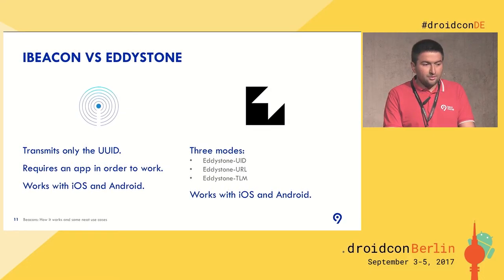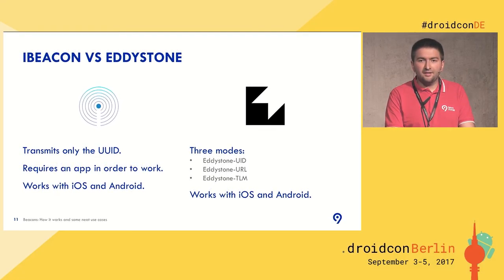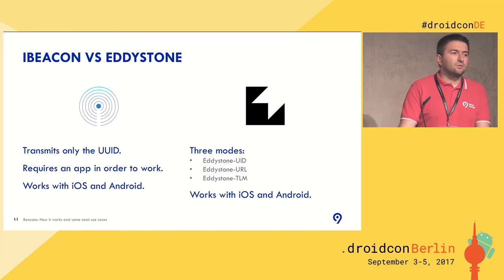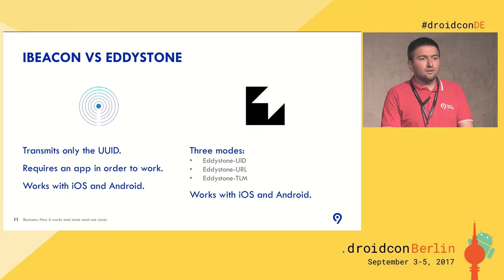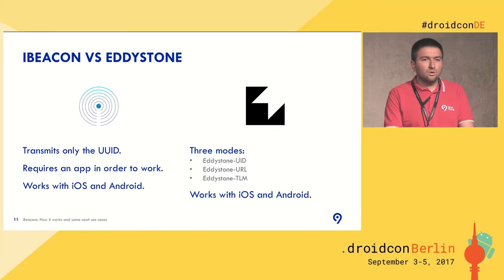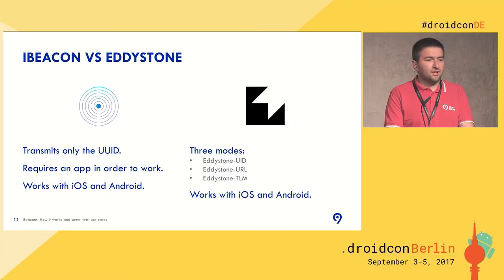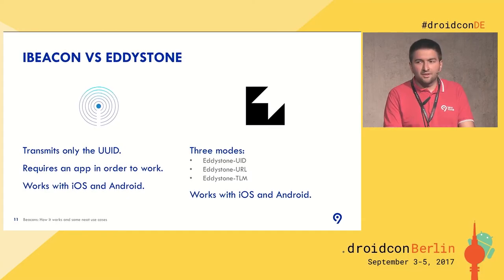The last mode is Eddystone Telemetry. This one is a bit more complex. It emits an ID, but it also emits some telemetry information. Some of these beacons have a temperature sensor, humidity sensor, or even an accelerometer. So with each message broadcasted by the beacon, besides the ID, you will also get telemetry information — for example, current temperature, humidity, or acceleration.